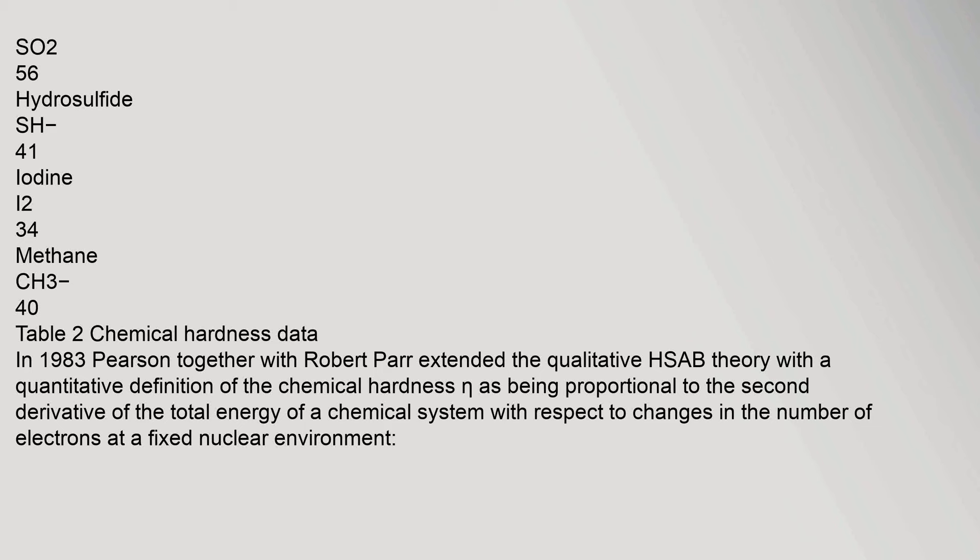In 1983, Pearson together with Robert Parr extended the qualitative HSAB theory with a quantitative definition of the chemical hardness η as being proportional to the second derivative of the total energy of a chemical system with respect to changes in the number of electrons at a fixed nuclear environment.